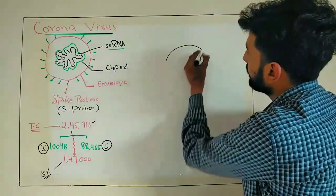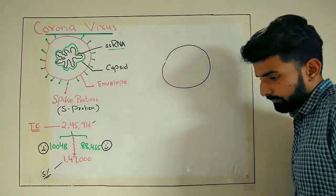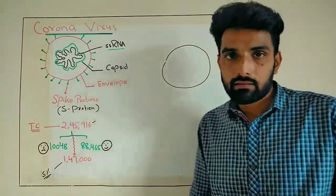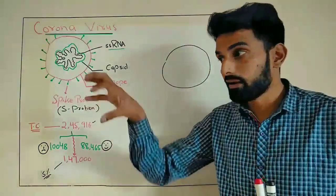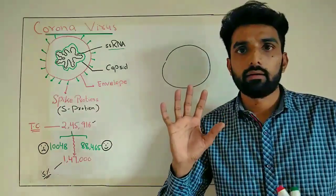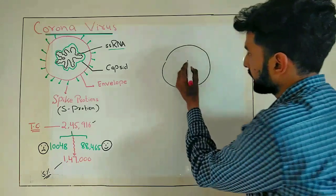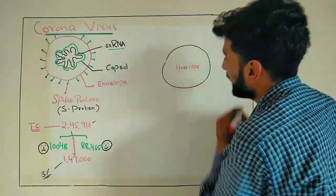To understand the penetration of coronavirus in our cell, you must know that every virus has some protein receptor present on the host cell for the attachment. Every cell has some receptors. For example, this is host cell.